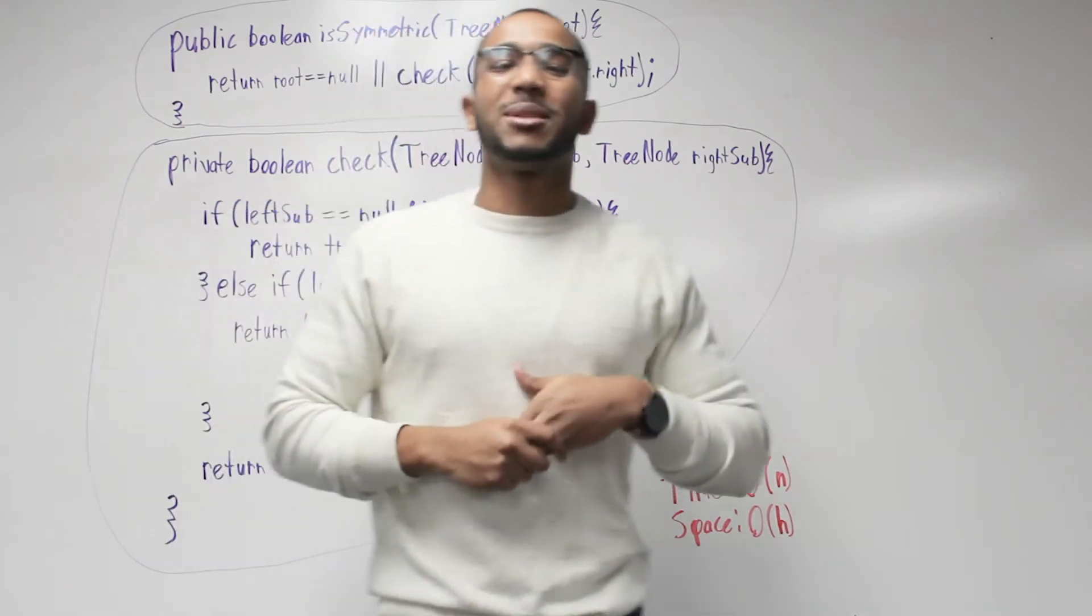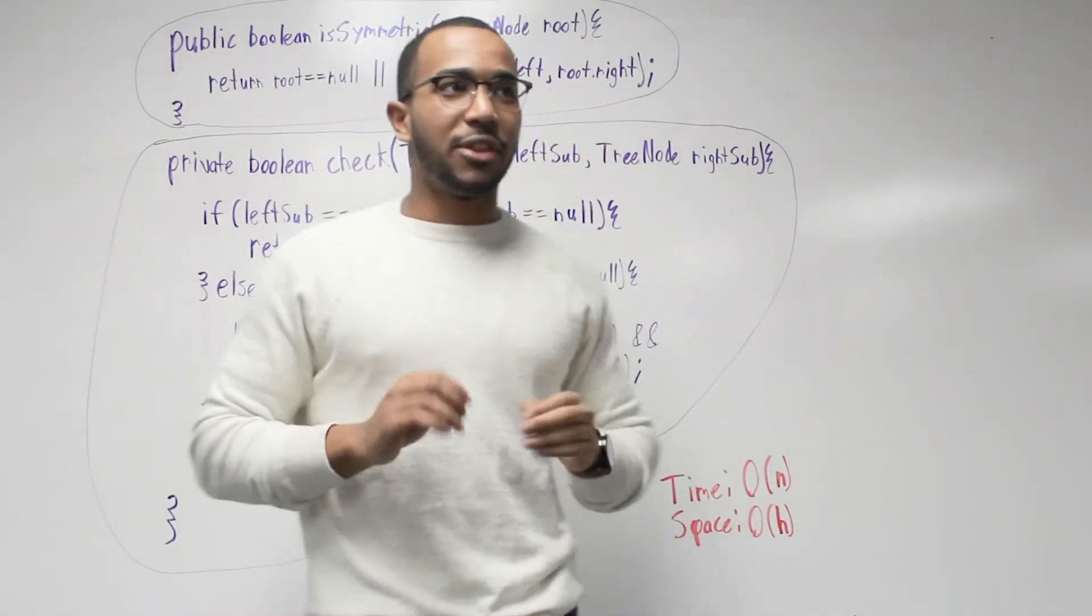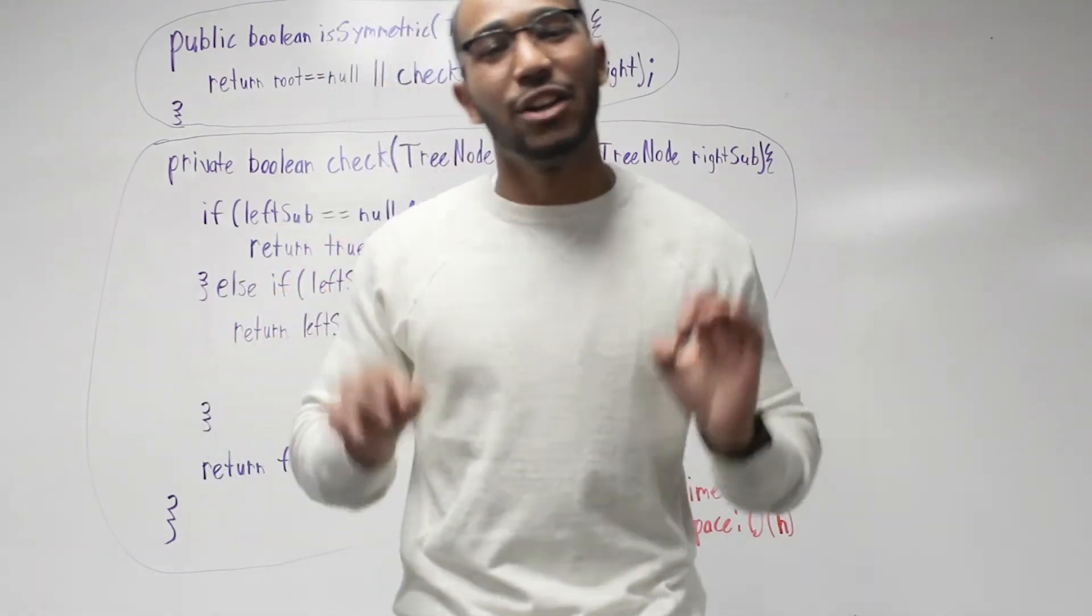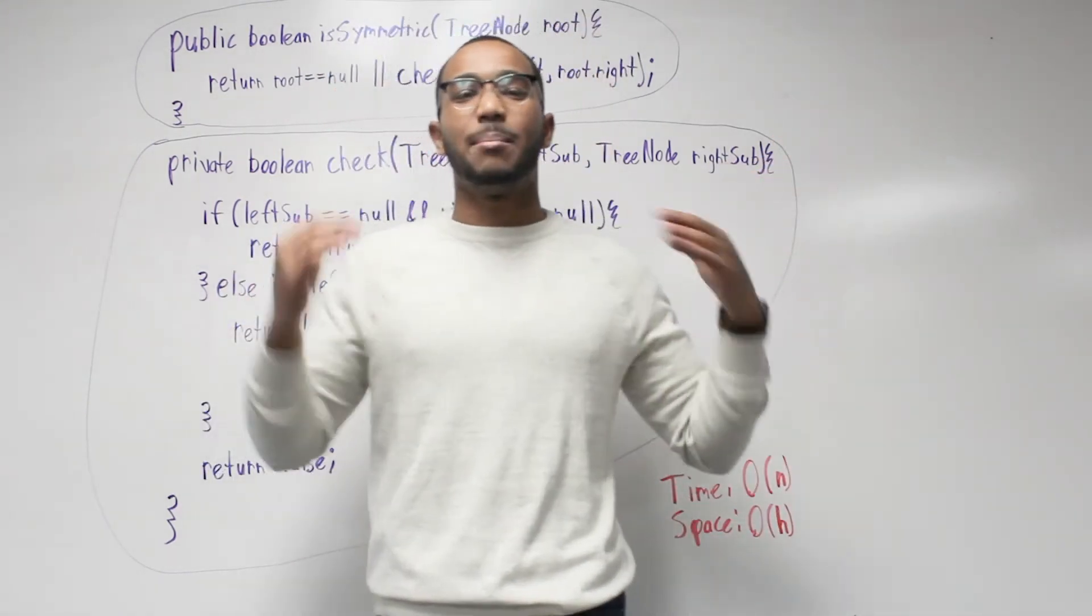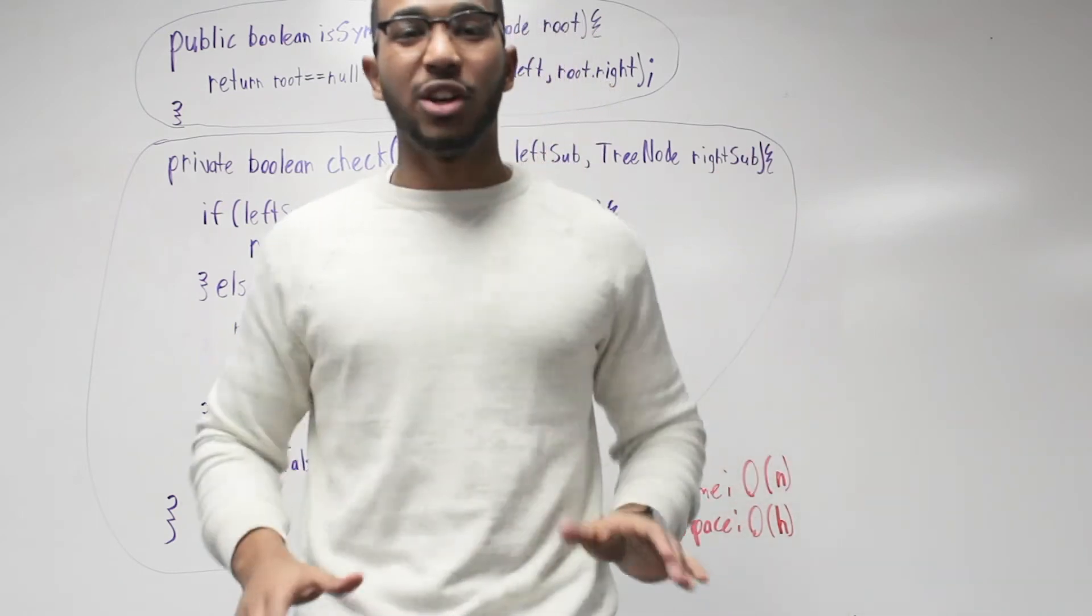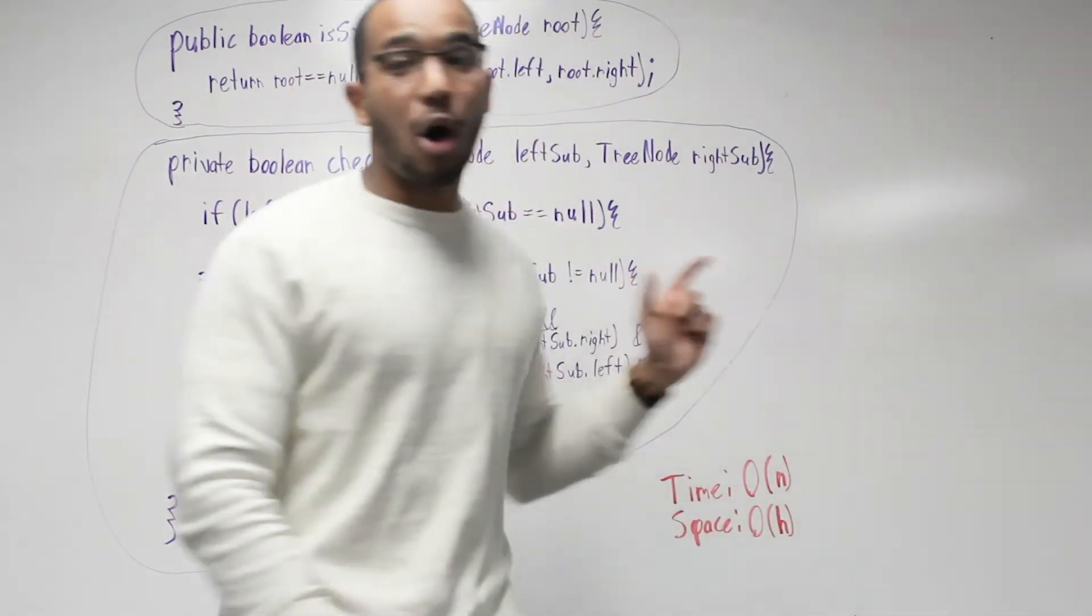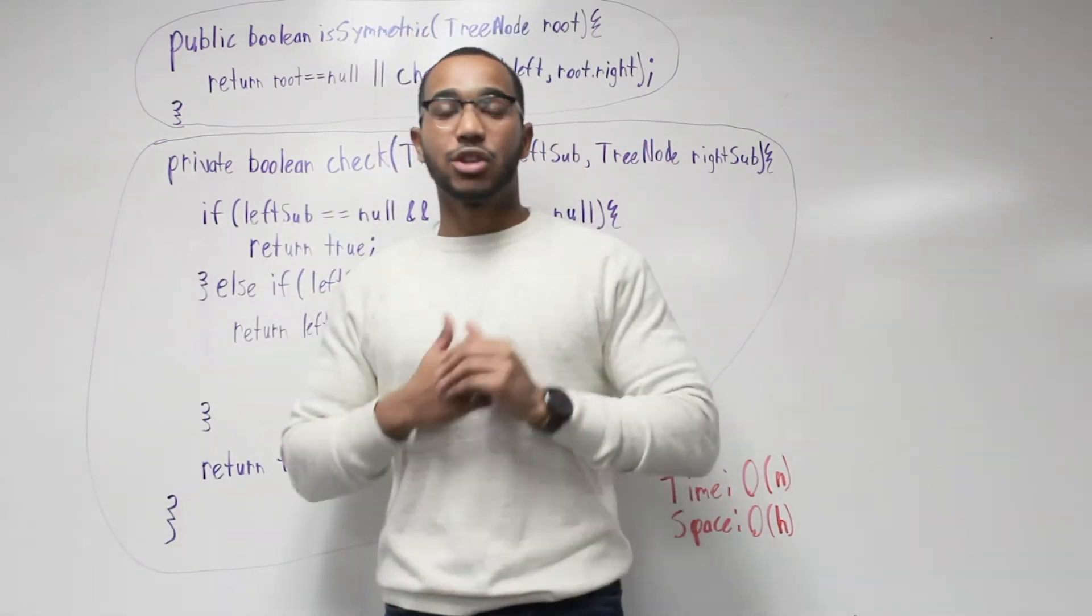What would the time and space complexity be? The time is kind of easy because we're going to need to check n nodes. In order to check if the tree is symmetric, we must check all of the nodes. We have n nodes, so we have O of n time as our time complexity.